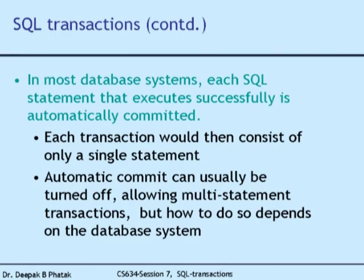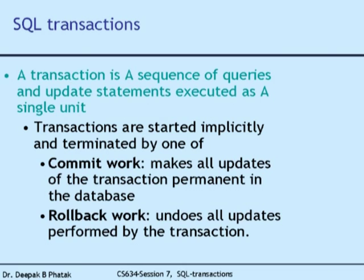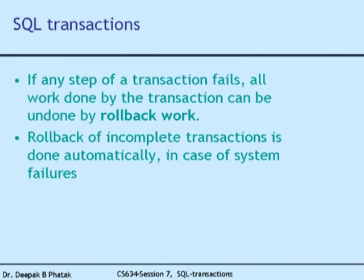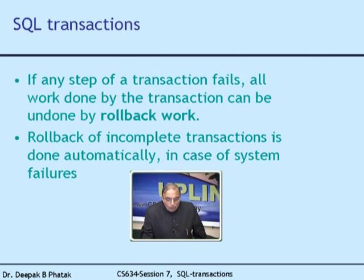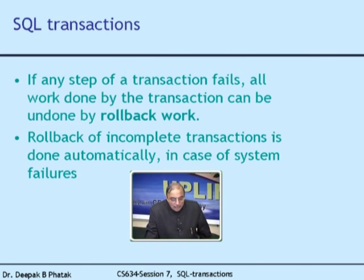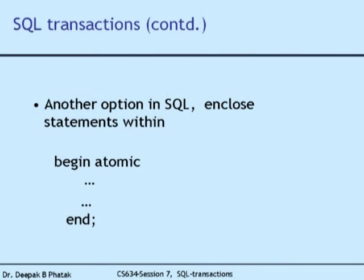In normal SQL syntax, a transaction is started implicitly and then terminated by COMMIT WORK or ROLLBACK WORK. If any step of the transaction fails, all work done by the transaction can be undone by ROLLBACK WORK. Rollback of incomplete transactions is done automatically in case of system failures. The key syntax you should use is: enclose all SQL statements within BEGIN ATOMIC and END. When you say BEGIN ATOMIC, all SQL statements inside the block form a single transaction — a single unit of work — and the whole unit is treated as atomic.